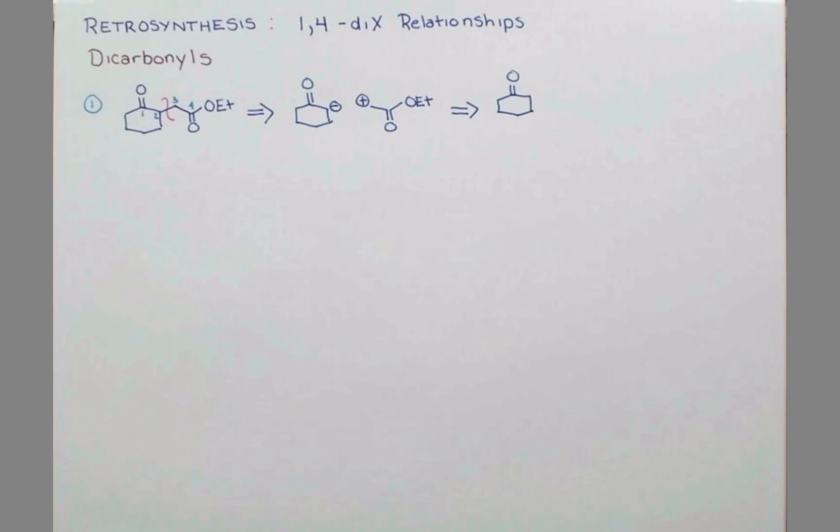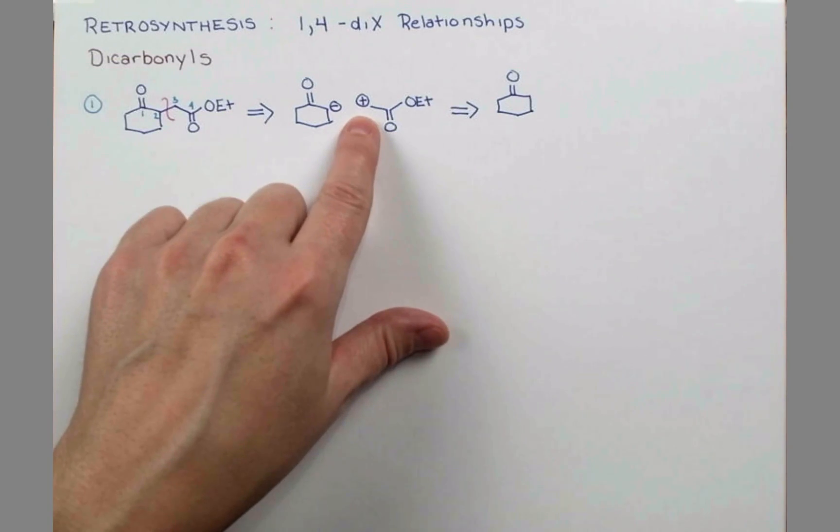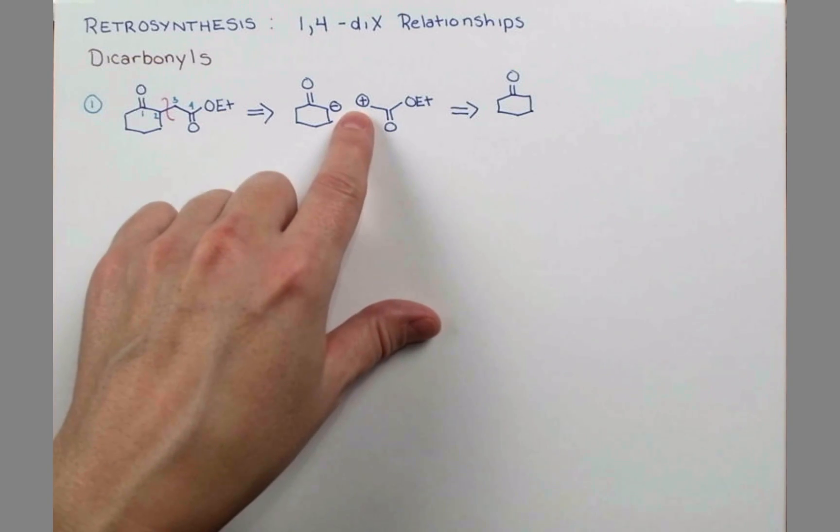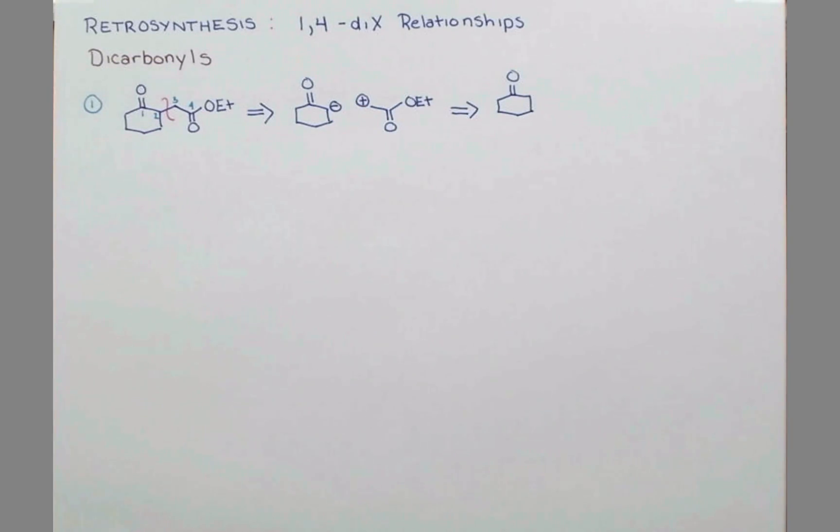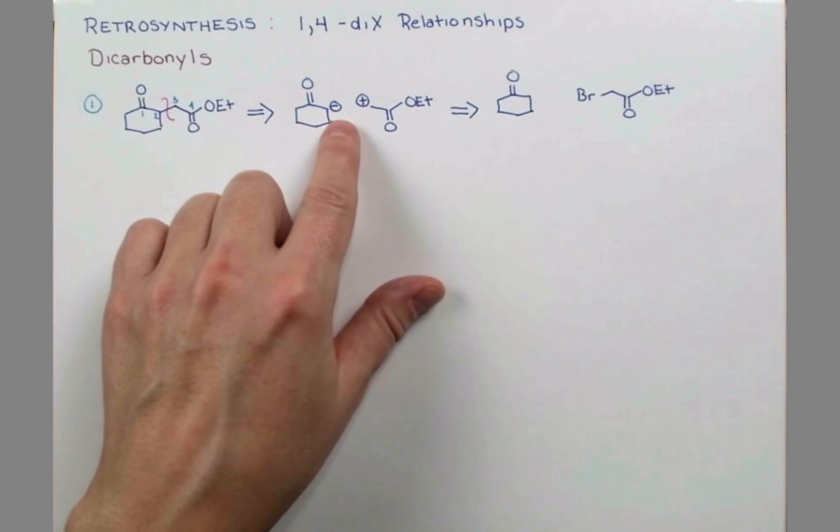We need to introduce some sort of a leaving group. That's a pretty good thing too, because we know that we can enolize and put a halogen right next to a carbonyl, alpha to a carbonyl, smoothly in an enolization reaction. So having a leaving group here will give that positive character. We might envision this coming from this bromide.